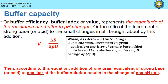Buffer capacity, sometimes called buffer efficiency, buffer index, or buffer value, refers to how much a buffer system will resist the change in pH. It can be calculated by knowing the amount of added acid or base divided by the change in pH resulting from those additions.